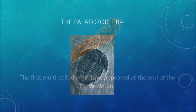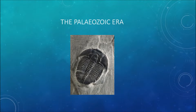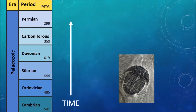The Precambrian ended about 540 million years ago, when we suddenly see animals with shells in the fossil record. This sparks the beginning of the Paleozoic Era. We divide the Paleozoic Era into six or seven periods, depending on which part of the world you're from. My timescale shows six periods: Cambrian, Ordovician, Silurian, Devonian, Carboniferous, and Permian.